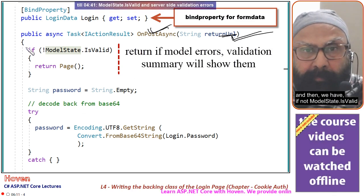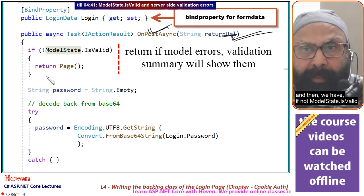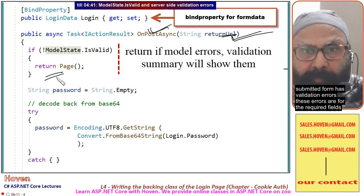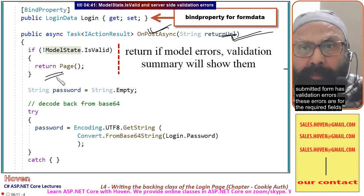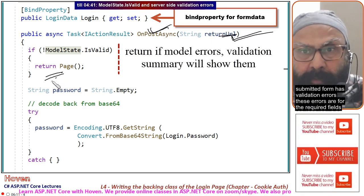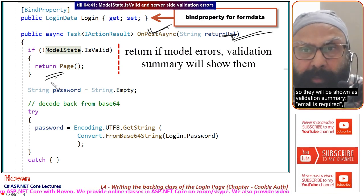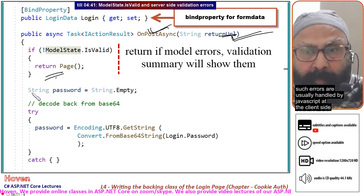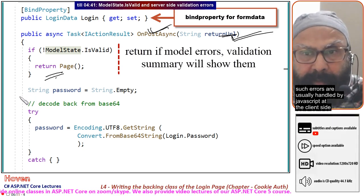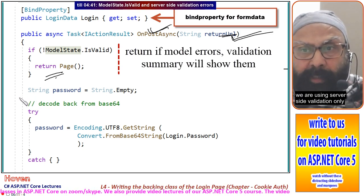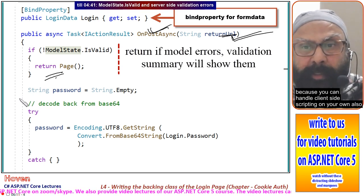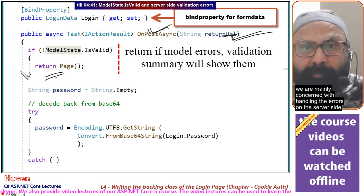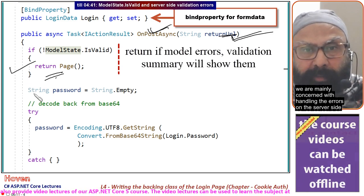We have: if not ModelState.IsValid, return Page. This returns the page if the submitted form has validation errors — these errors are for required fields and will be shown as a validation summary, such as "email is required", "password is required". Such errors are usually handled by JavaScript on the client side, but we are using server-side validation only. We are mainly concerned with handling errors on the server side.